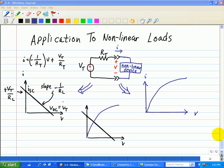Here we're going to discuss the application to nonlinear loads. And in this case, the Thevenin and Norton equivalent circuits can be used to find the response of a two-terminal nonlinear device, as shown here.